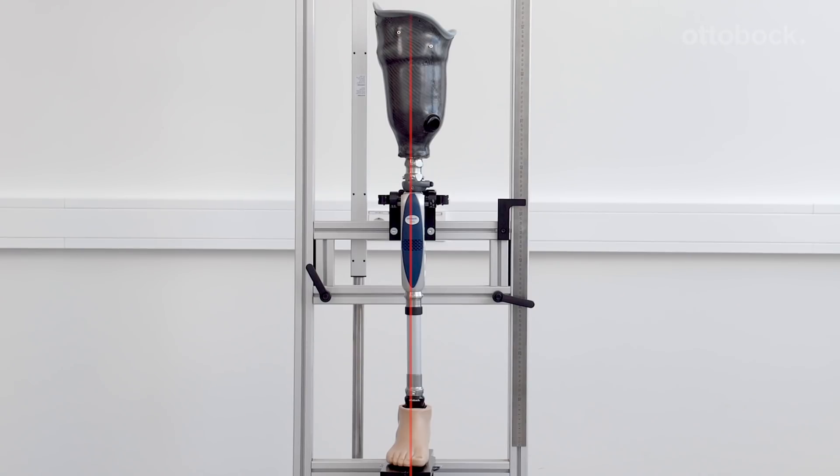The alignment reference line runs between the first and second toe, the middle to outer edge of the knee, and the middle of the socket.